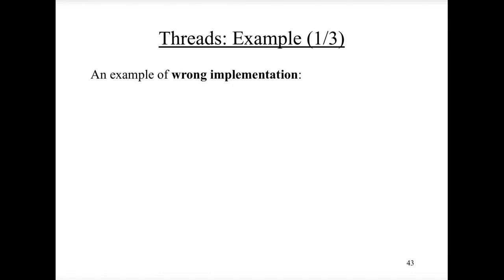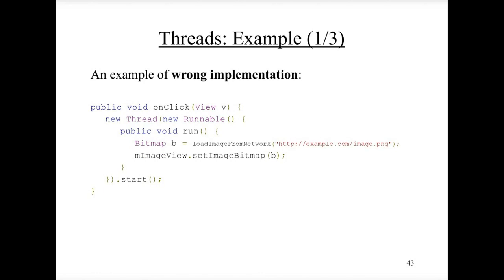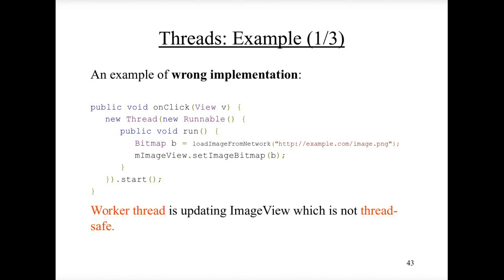Here is an example of a wrong implementation. On a button's onClick callback, you create a new thread to download an image, and when the thread finishes downloading, it directly modifies the ImageView. This is wrong — a worker thread is updating the ImageView, which is not thread-safe.